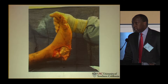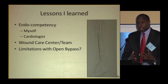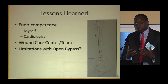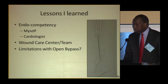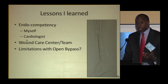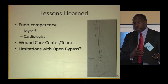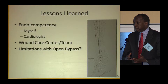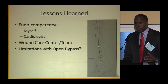Either way, the poor patient ended up with a below-knee amputation. I went back and said, okay, what should I learn from this case? This trial has always made me re-evaluate myself as a surgeon. One: endocompetency of myself — would I have taken the time or had the skill to re-canalize all three tibial vessels? Would I have just revascularized to the anterior tibial, the best vessel there, and stopped?